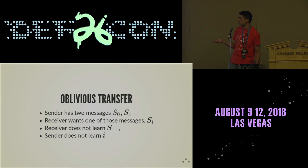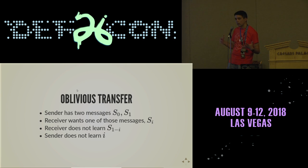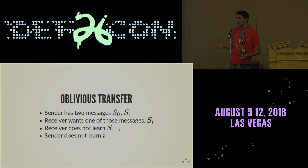In the original definition it was just two messages. It's since been expanded — you can have N messages and allow for up to K requests. They implemented what's called an adaptive oblivious transfer protocol in Charm.